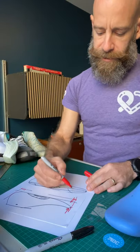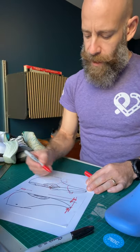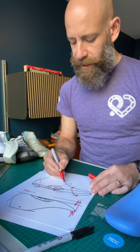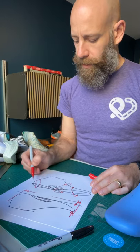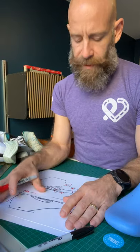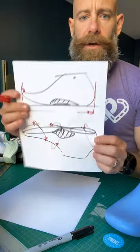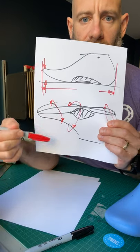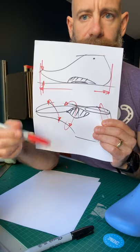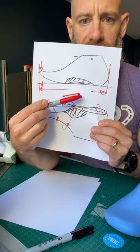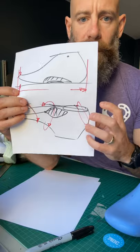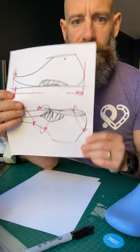The other characteristics relating to fit come into play with the overall volume of the last. There are three things that are really important here: the ball girth, the instep, and the heel cuboid. The ball girth is measured at the widest part of the forefoot and is the measurement around the foot. The instep is measured at the waist and is similarly the measurement around the foot. The heel cuboid is the measurement of the volume of the heel.